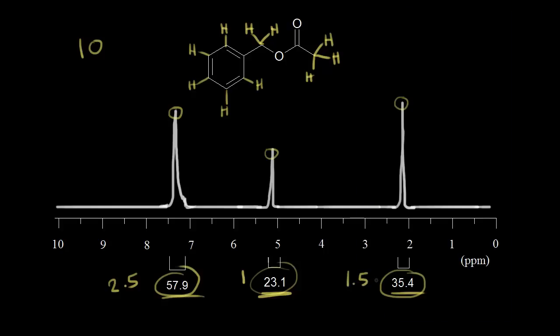And this gives us a ratio of the protons that are giving these three signals. So the ratio would be 2.5 to 1 to 1.5. But you can't have 2.5 protons. You can't have half a proton here. And so those aren't the exact number of protons. We need to account for 10 protons in our molecule.